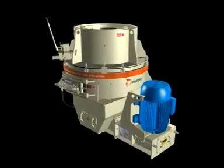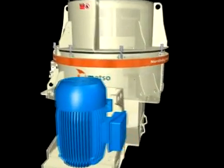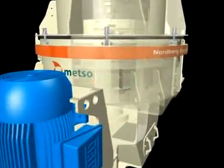The Barmak crusher uses a field-proven rock-lined rotor that acts as a high-velocity drystone pump, hurling a continuous rock stream into a rock-lined crushing chamber.